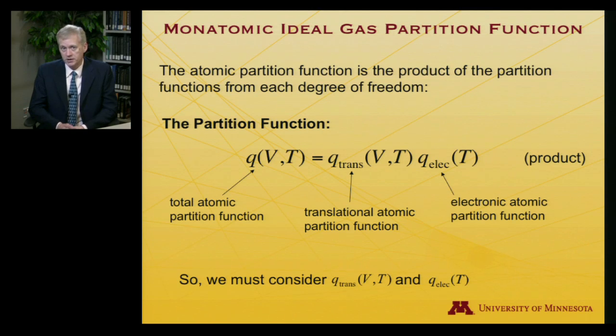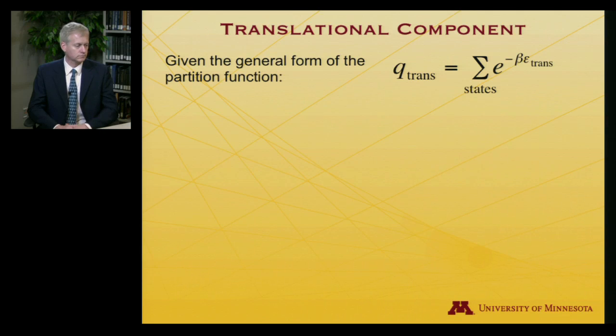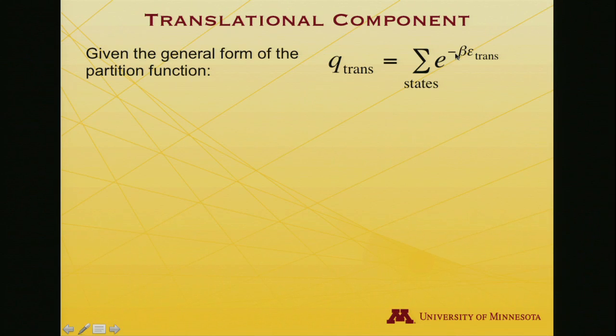The atomic partition function then will be the product of the partition functions from each degree of freedom. We've seen that before, when you have an exponential of a sum of energies, that's like a product of exponentials of energies, and each of those exponentials is a partition function. So we can write for the atom, the atomic partition function which depends on volume and temperature is equal to the translational partition function times the electronic partition function, product of the two.